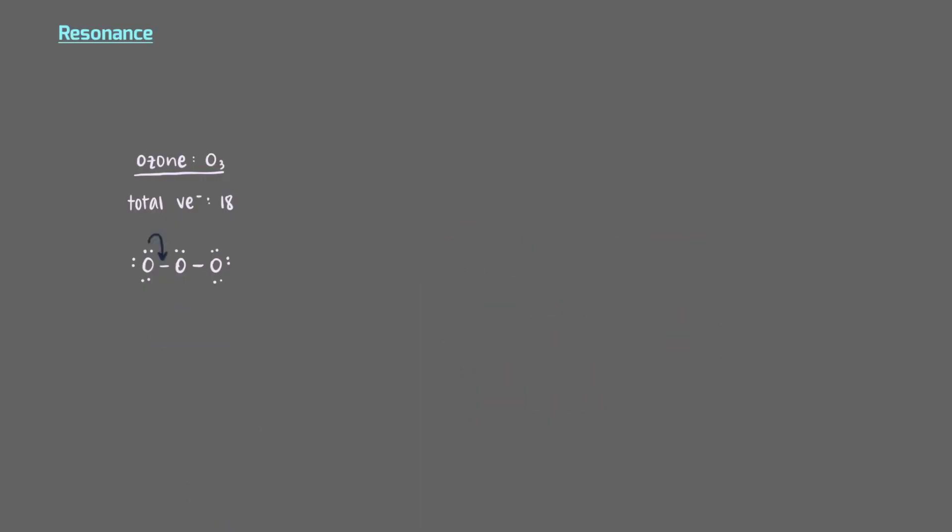If we move this lone pair to make a bond, we get this Lewis structure. Let's assign formal charges. What is the formal charge of this oxygen? This oxygen has a formal charge of zero, since there are six electrons in a neutral oxygen and six electrons in our lasso.